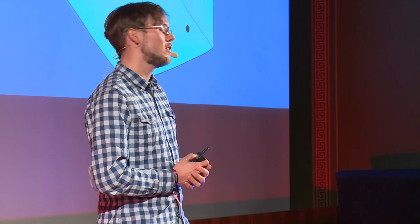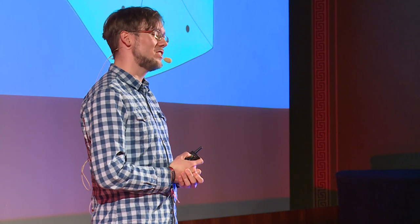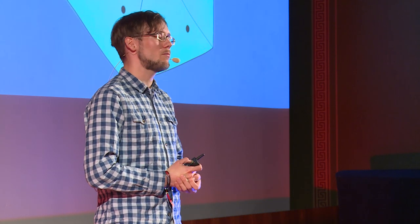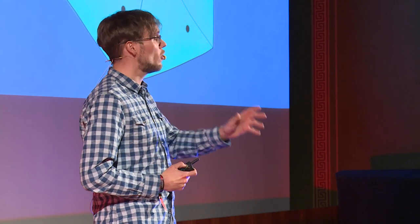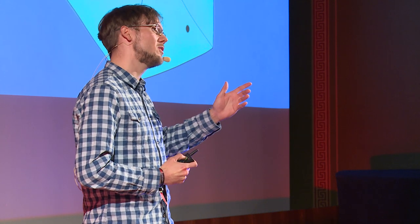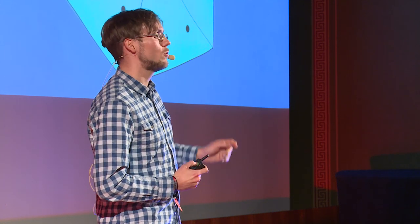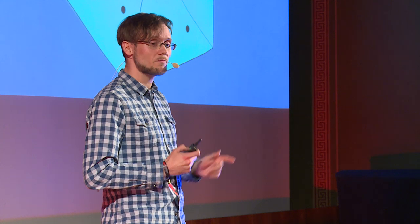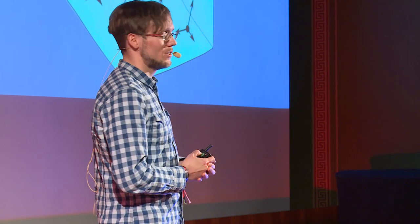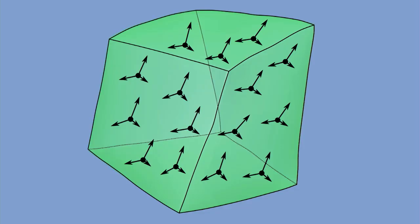But around 1900, there were the French brothers Eugène and François Cosserat — one was an engineer and one a mathematician — who thought maybe it's a better idea to not only consider the position of these material points, but also their orientation in space. In order to visualize the orientation, I have used these three arrows, and each arrow points in a main direction of the material point.